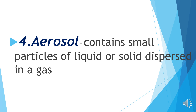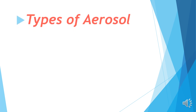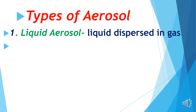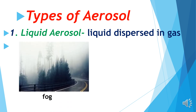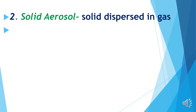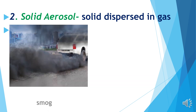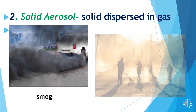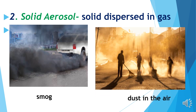Aerosol contains small particles of liquid or solid dispersed in a gas. There are two types: Liquid aerosol — liquid dispersed in gas, like fog and clouds. Solid aerosol — solid dispersed in gas, like smog (a combination of smoke and fog) and dust in the air.